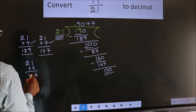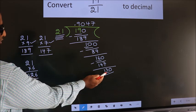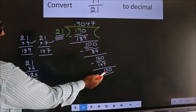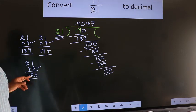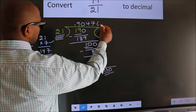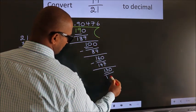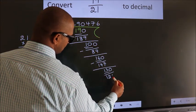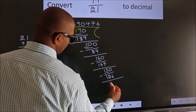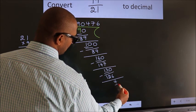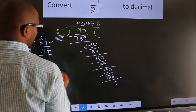21 × 6: 6 ones are 6, 6 twos are 12 → 126, which is close to 130. So we go with 6, meaning 21 × 6 = 126. Now we subtract and get 4. Here we have 4 and 21.